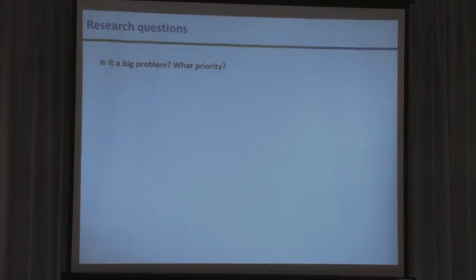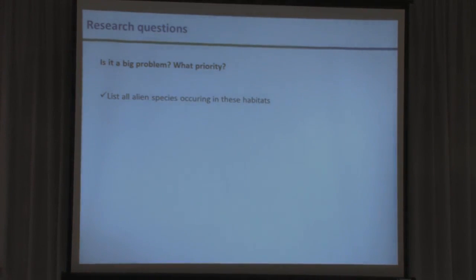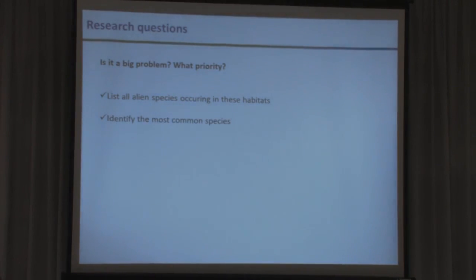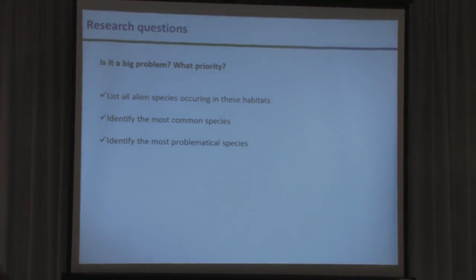Based on this situation, the authorities asked us basic questions like: is it a big problem, and what is the priority among the different habitats? They wanted us to make a list of occurring species, assess occurrence, identify the most common species, but also identify the species that cause the most problems in terms of impact — so they can figure out the best thing to do and where to put resources to fight this general problem.